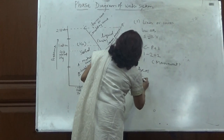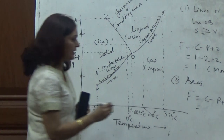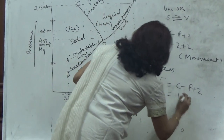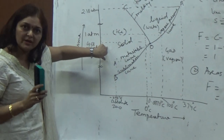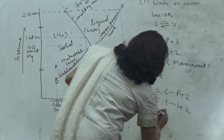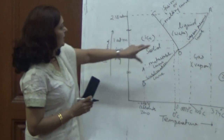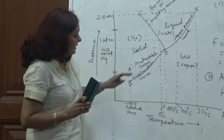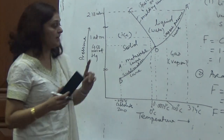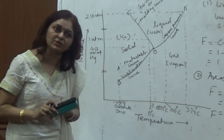We also calculate the degree of freedom for the areas using F = C − P + 2. Component is one, and along the area only one phase exists, so phase is one. The value of degree of freedom comes to two, meaning the transformation from one phase to another takes place on changing both pressure and temperature — so it depends on both.